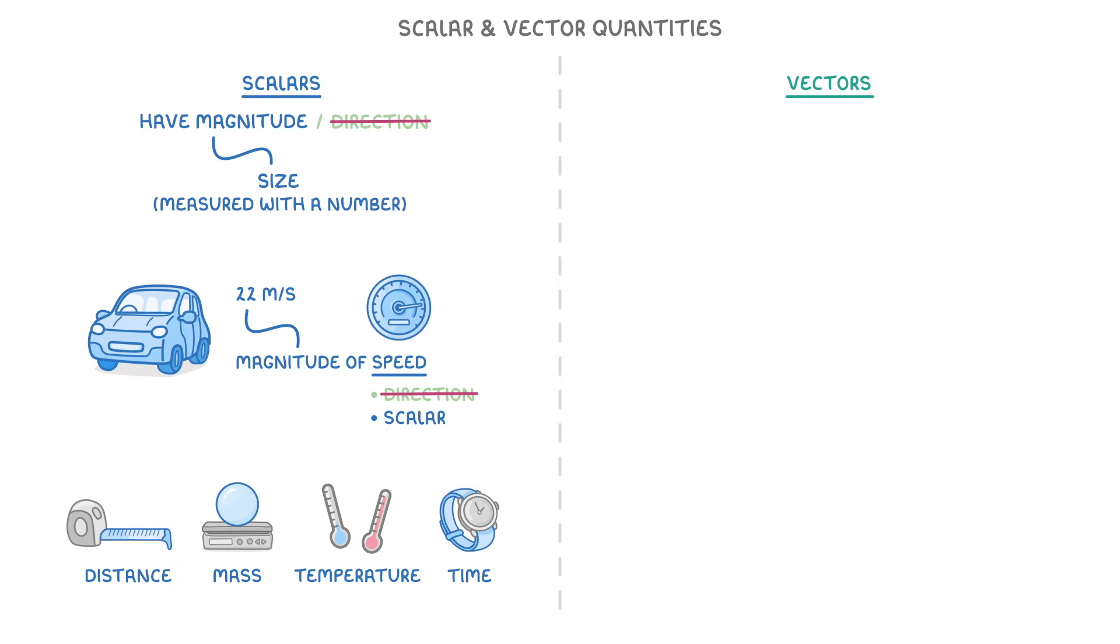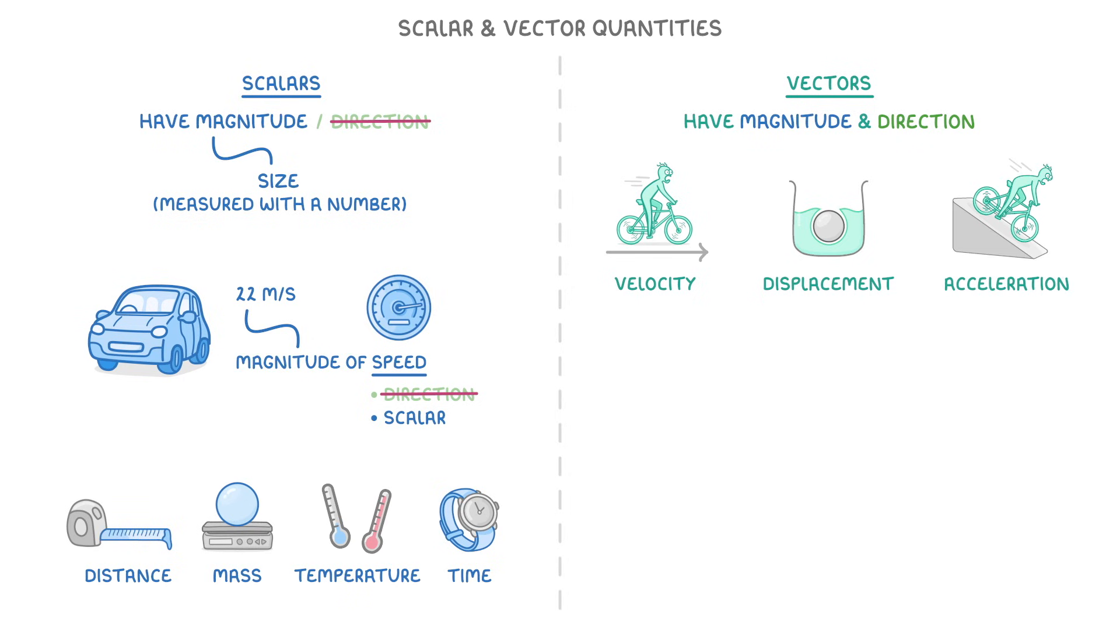Vectors, on the other hand, have both a magnitude and a direction. These include things like velocity, displacement, acceleration, force, and momentum.